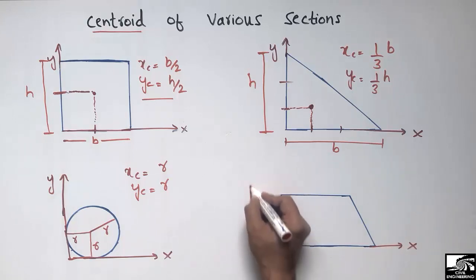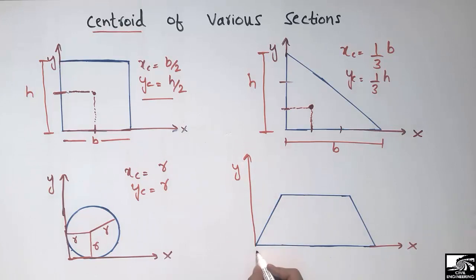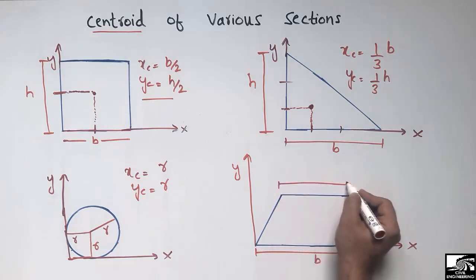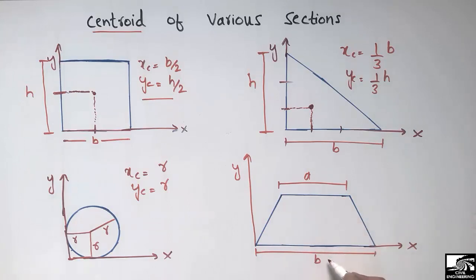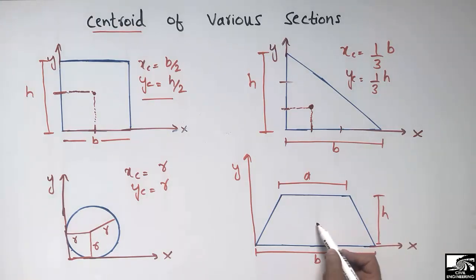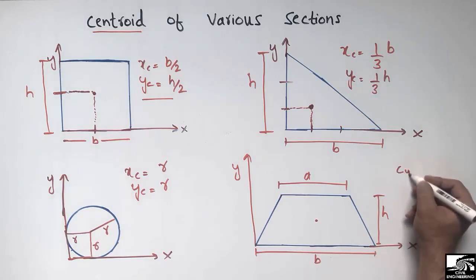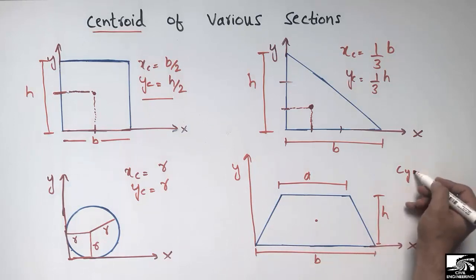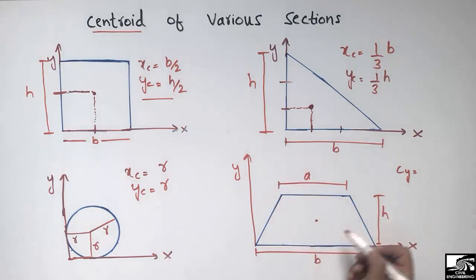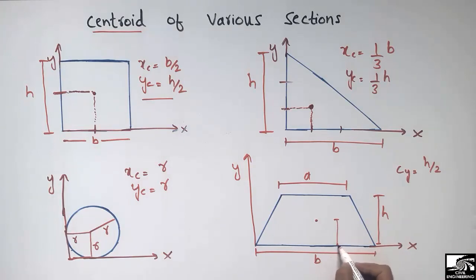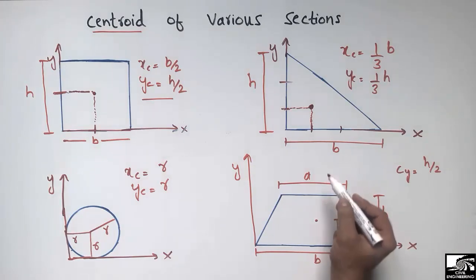Now let's discuss the centroid of a trapezoid. We draw the x-axis and y-axis. The largest length of the trapezoid is represented by B, the smallest length by A, and these two lengths are parallel to each other. The height of the trapezoid is H. Along the y-axis, it looks like a rectangle, so the centroid CY is simply H/2 — the midpoint of the height measured from the bottom.